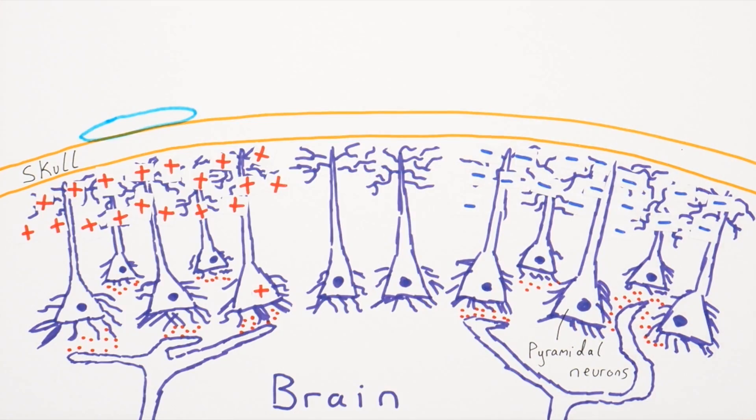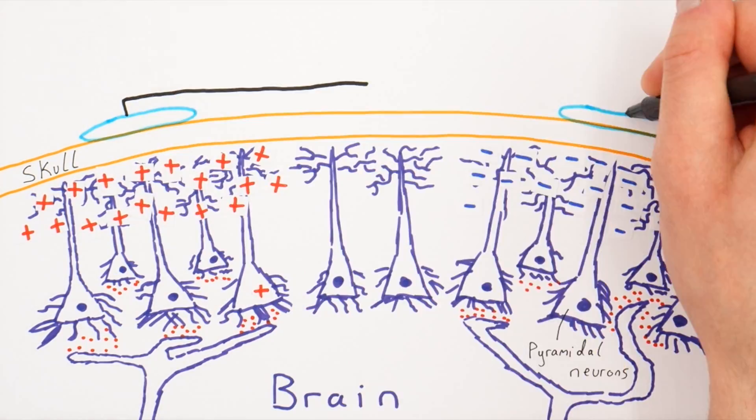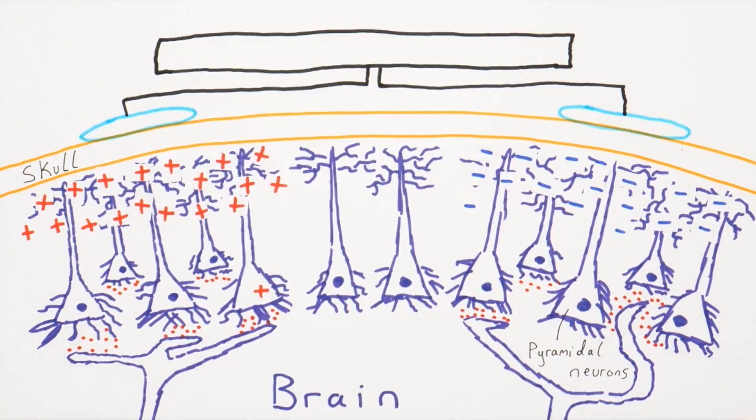So we can stick an electrode here and here, and measure the difference in charge between these two areas. This is exactly what an EEG signal is — the electrical difference between a pair of electrodes on two different parts of the brain, created as a result of clusters of pyramidal neurons being excited and inhibited.